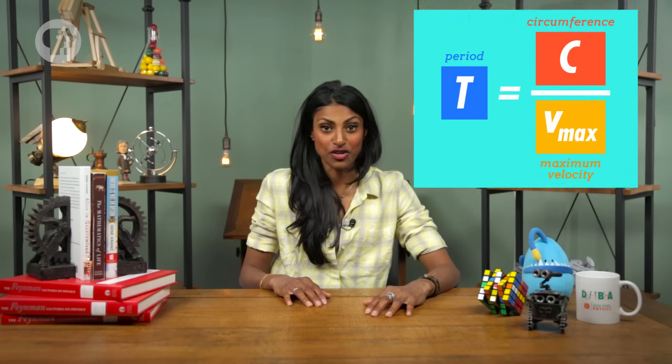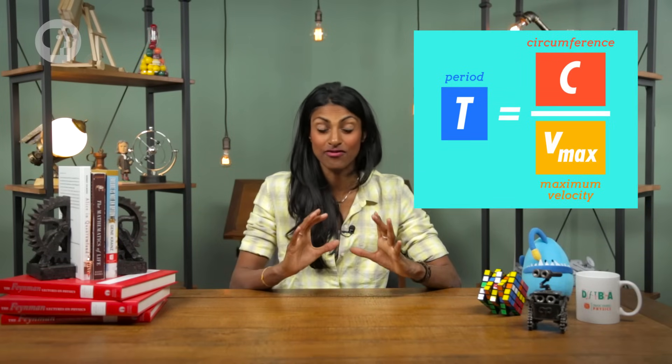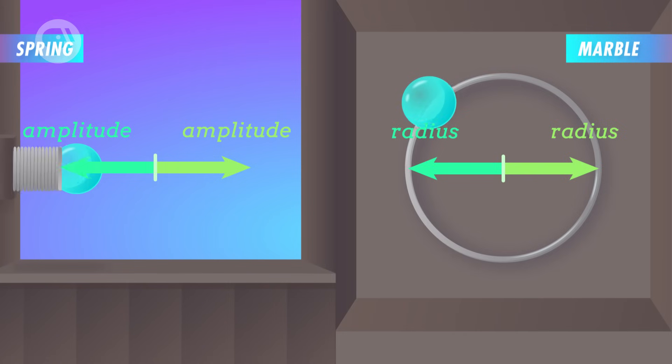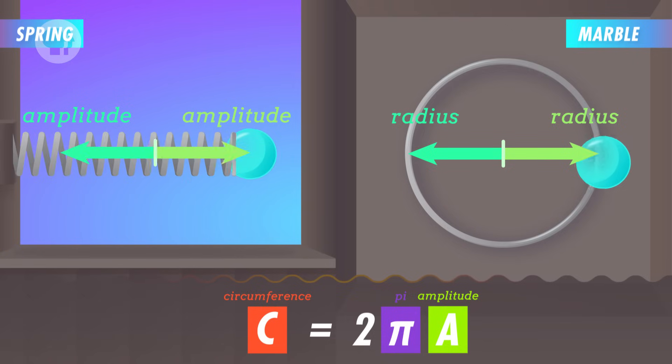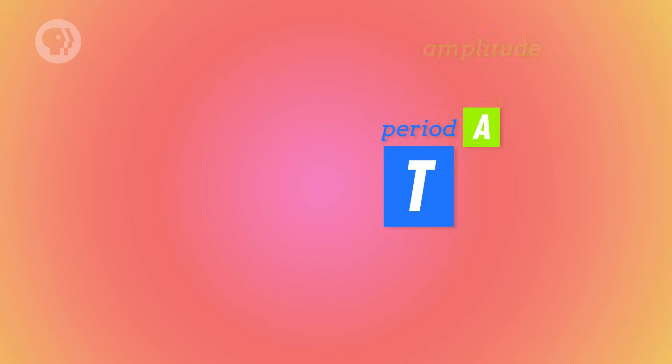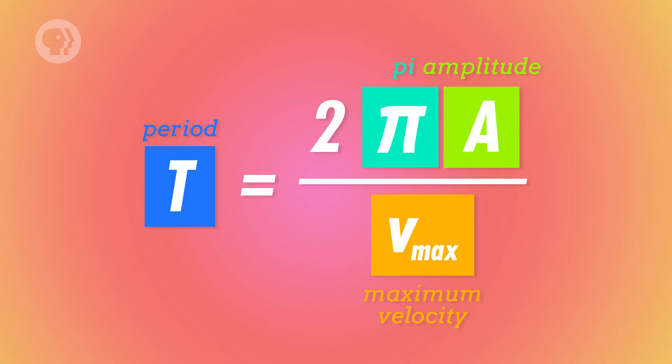So let's recall what we know about uniform circular motion to see what it can tell us about simple harmonic motion. We know that the time it takes for the marble to move around the ring once is called the period. We also know that the period will be equal to the circumference of the ring divided by the marble's speed. And the radius of the circle is the same as the ball's amplitude on the spring, so its circumference will be equal to 2 times pi times the amplitude. This means that the period will be equal to 2 times pi times the amplitude divided by the marble's speed, which again is the same as the ball's maximum speed as it moves on the spring. And we can simplify that equation, since we know that the maximum speed of the ball is equal to the amplitude times the square root of the spring constant divided by the mass.